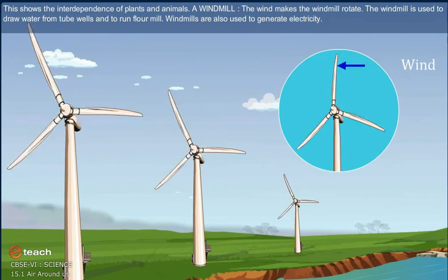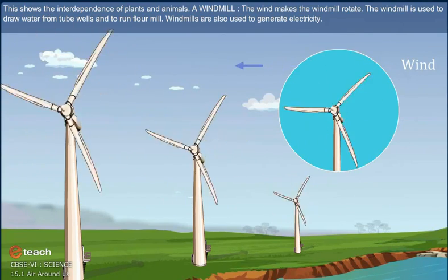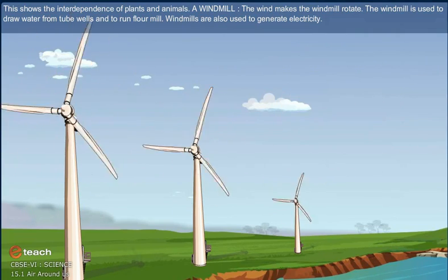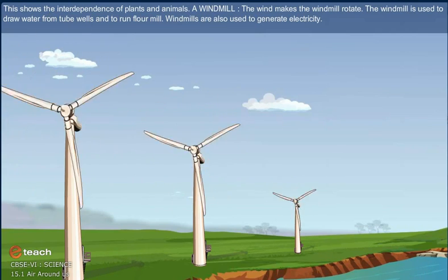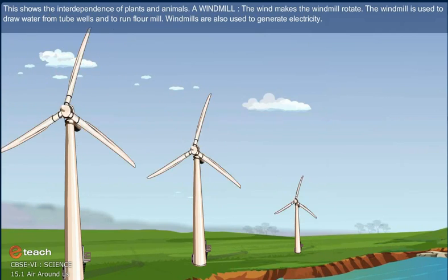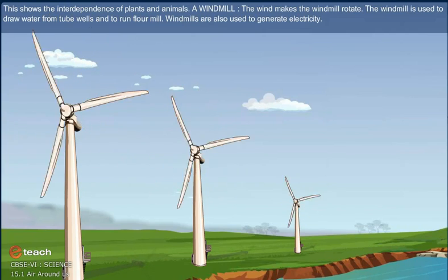A windmill. The wind makes the windmill rotate. The windmill is used to draw water from tube wells and to run flour mills. Windmills are also used to generate electricity.